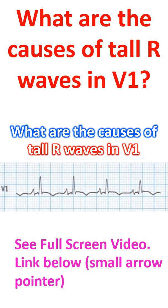Tall r in V1 usually makes us suspect right ventricular hypertrophy. But tall r in V1 can occur without heart disease due to misplaced chest leads, rightward shift of the heart, dextroversion due to congenital or acquired causes, and occasionally as a normal variant.